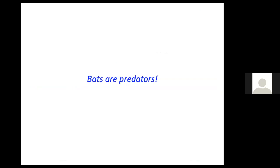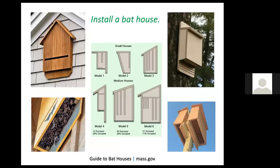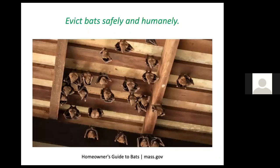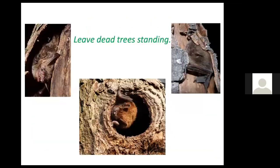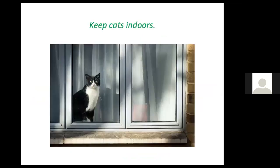Bats are also beneficial because they eat nothing but insects. The two most common bats in New England are the little brown bat and the big brown bat. The little brown bat population has declined by 90% due to white nose syndrome, a fungal disease. We can offer clean roosts not infected by white nose syndrome — either purchase one online or make one. Visit mass.gov to learn more about bat houses and their placement: under the eaves, south-facing, is a good location. We're not allowed to evict bats in the middle of summer because they are raising their pups. Mass.gov explains how and when to evict bats safely and humanely. Leave dead trees standing for bats, don't use pesticides, keep cats indoors, and minimize artificial lighting that disturbs bats while they're hunting at night.